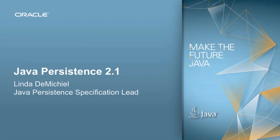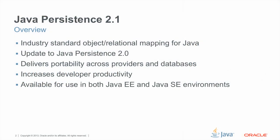Hello, this is a session on Java Persistence 2.1. I'm Linda DeMiquel, and I'm the specification lead for this work. In this talk, I'm going to be giving you an overview of the new features in Java Persistence 2.1, or JPA as it's frequently referred to. Java Persistence is the industry standard object relational mapping API for Java applications.